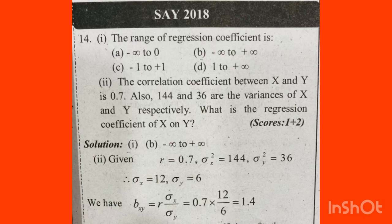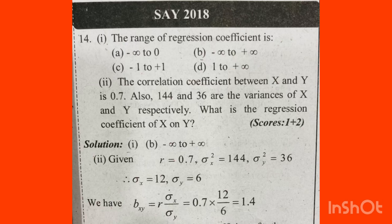What is the square root? Sigma x: square root of 144 is 12. Sigma y: square root of 36 is 6. The regression coefficient bxy is equal to r into sigma x divided by sigma y. Apply this equation: r into sigma x by sigma y.